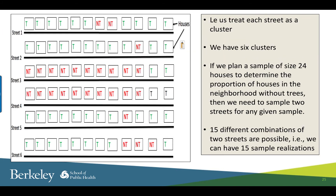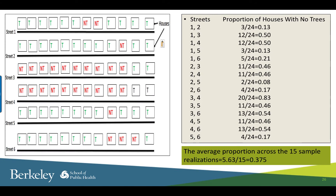Now let us see what happens to the proportion estimate if you do cluster sampling. Let us consider each street comprising 12 houses as a cluster — then we have six clusters. If we want a sample size of 24 houses, we randomly select two streets. With 12 houses on each street, two streets give us a sample of 24 houses. You can sample two streets in many different combinations. I have listed all the different combinations of streets and the corresponding calculation for proportion of houses with no trees. There are 15 combinations — that means 15 different samples, or 15 sample realizations.